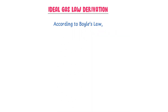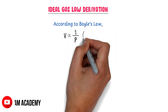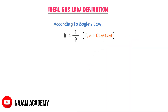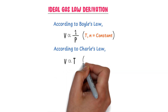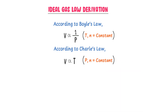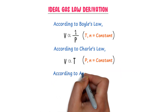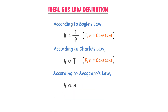According to Boyle's law, volume is inversely proportional to pressure while keeping temperature and number of moles constant. According to Charles' law, volume is directly proportional to temperature while keeping pressure and number of moles constant. According to Avogadro's law, volume is directly proportional to number of moles while keeping pressure and temperature constant.